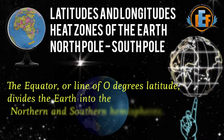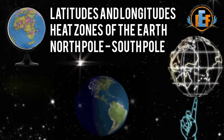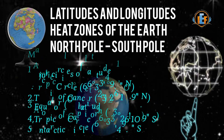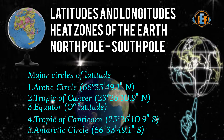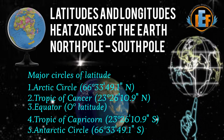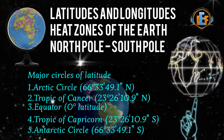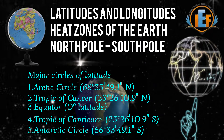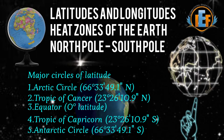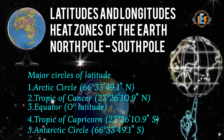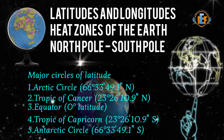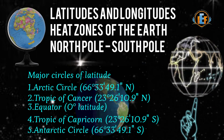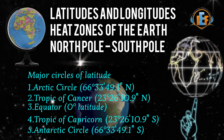Zero degree is called the equator. 23 and a half degrees north latitude is the Tropic of Cancer. 23 and a half degrees south latitude is the Tropic of Capricorn. 66 and a half degrees latitude in the north is called the Arctic Circle. 66 and a half degrees in the south is known as the Antarctic Circle. These latitudes are parallel to each other.